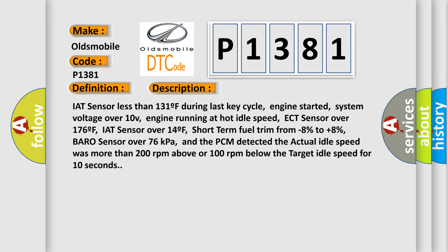The fault conditions include: IAT sensor less than 131°F during last key cycle, engine started, system voltage over 10V, engine running at hot idle speed, ECT sensor over 176°F, IAT sensor over 14°F, short term fuel trim from minus 8% to plus 8%, baro sensor over 76 kilopascals. The PCM detected the actual idle speed was more than 200 RPM above or 100 RPM below the target idle speed for 10 seconds.